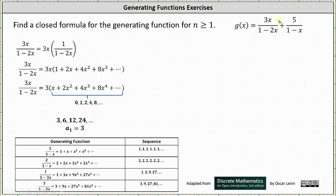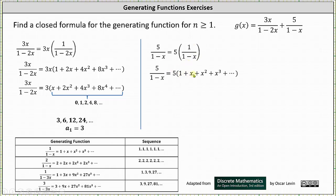Now to determine the sequence for 5 divided by the quantity 1 minus x, we should recognize this is just going to be 5 times the generating function for the constant sequence of 1s. We can write the quotient as 5 times 1 divided by the quantity 1 minus x, which equals 5 times 1 plus x plus x squared plus x cubed plus dot dot dot. Distributing the 5, we have a constant sequence of 5s where a sub 1 is 5.